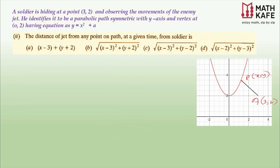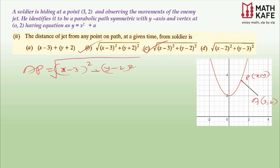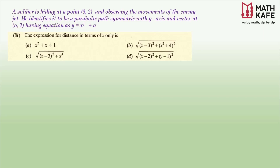The second question asks for the distance of the jet from any point on the path to the soldier. Let P(x, y) be any point on the curve at a given time. The soldier is at point A(3, 2). The distance AP is given by the distance formula: √[(x − 3)² + (y − 2)²]. This is option C.